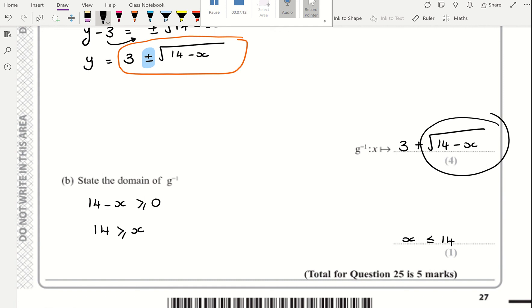The domain has to be the values excluded are all the values where x is smaller than or equal to 14, because that would make the domain work. If we wanted the values that are excluded, it would be x is bigger than or equal to 14. But we want to state the domain rather than the values that are excluded. So x has to be smaller than or equal to 14.